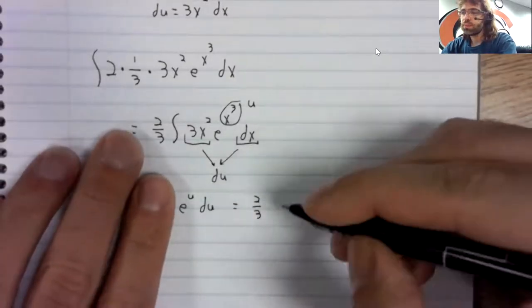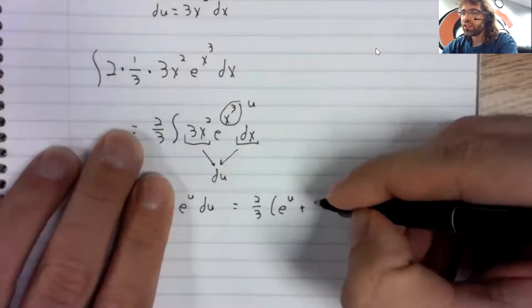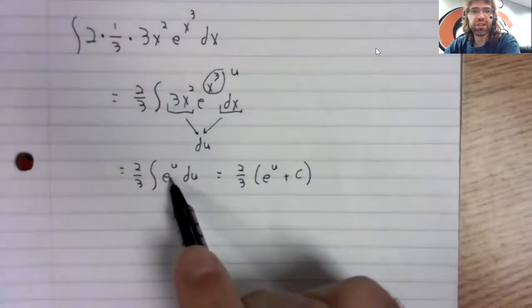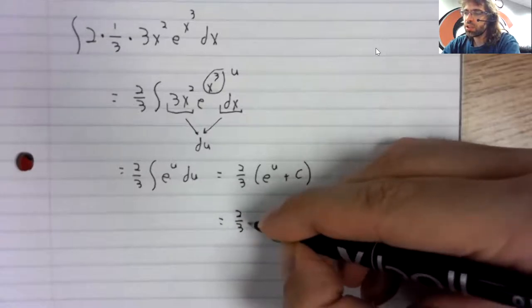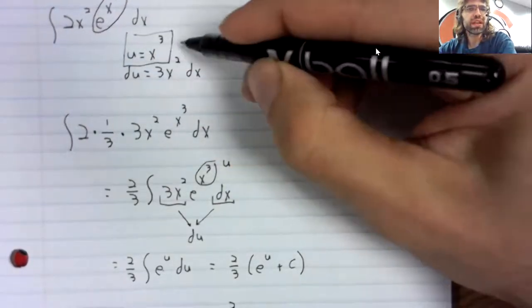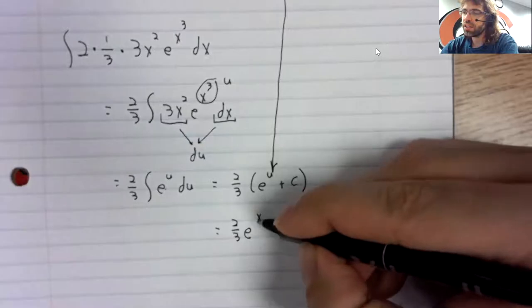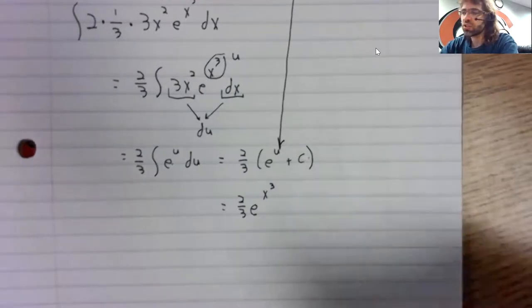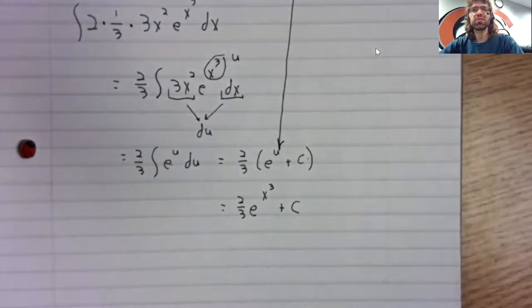x cubed is u. And we have 2 thirds the integral of e to the u du. The exponential is its own derivative and hence its own anti-derivative. The anti-derivative of this is this. u. What was u up here? u is x cubed. So we'll just take that and plug it in. And 2 thirds of a constant is still just a constant. So we'll still just write plus c.